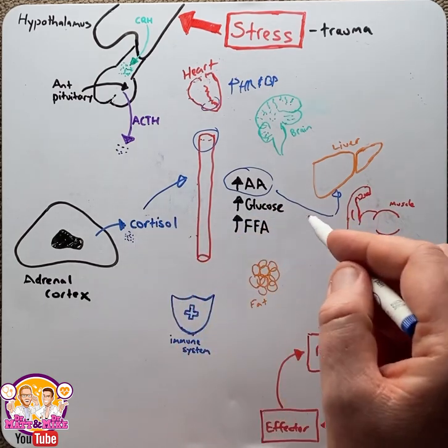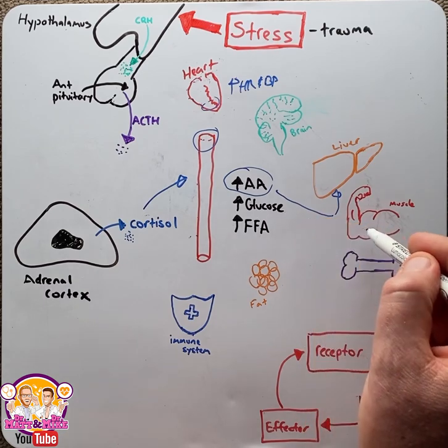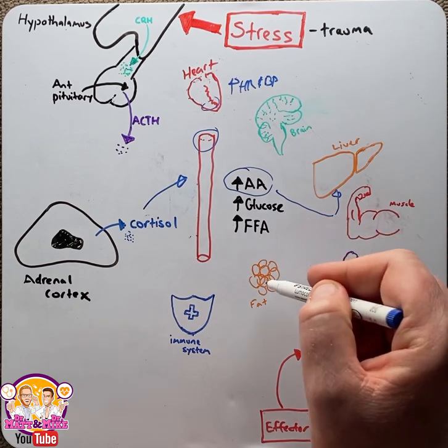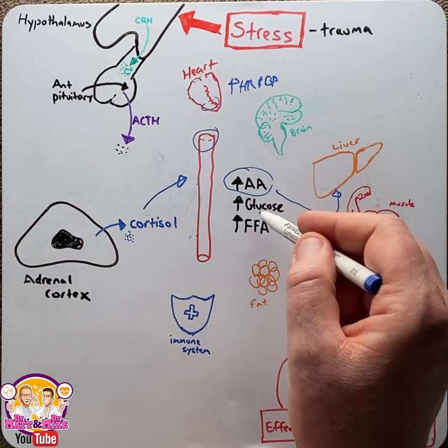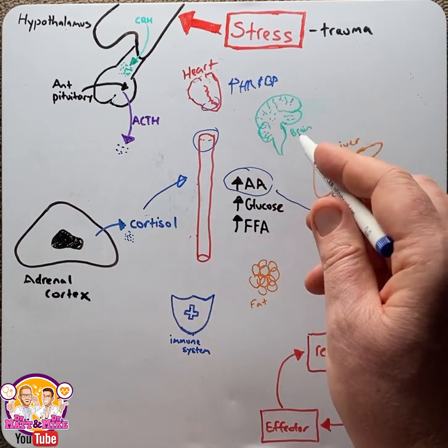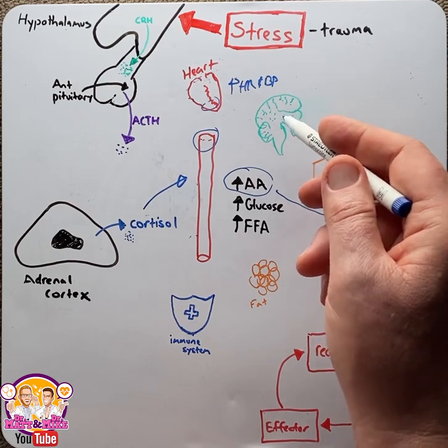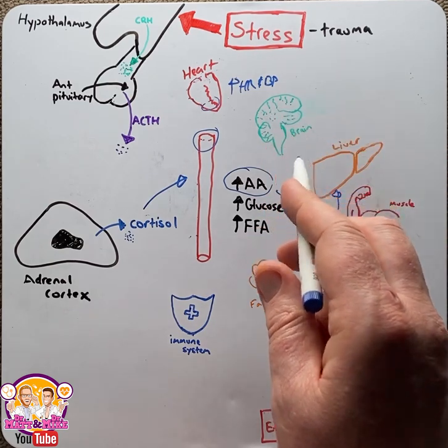Cortisol will block the insulin effect, therefore stopping glucose from being used in the muscles and fat, rather preferentially being used in the brain to improve the cognitive capacities of the brain.